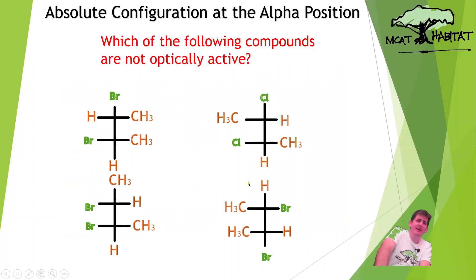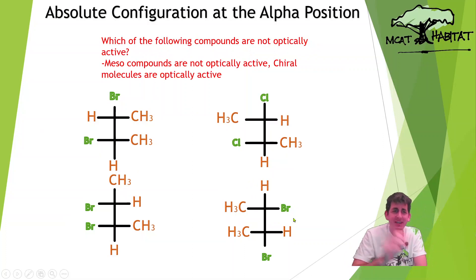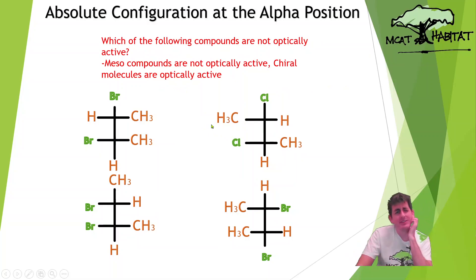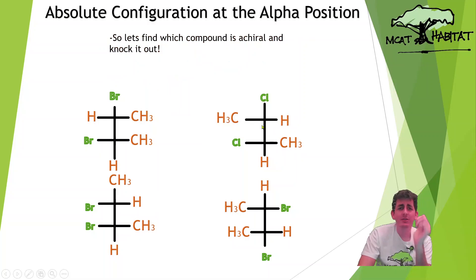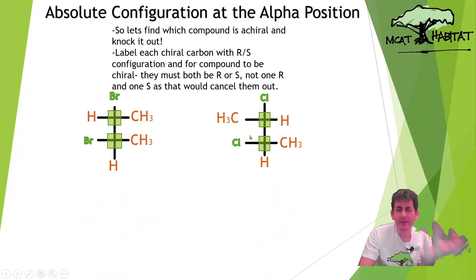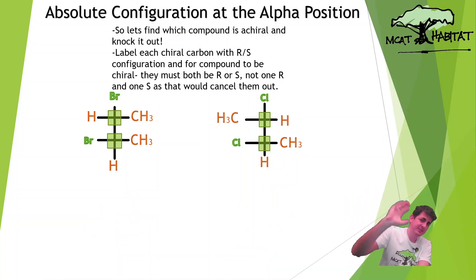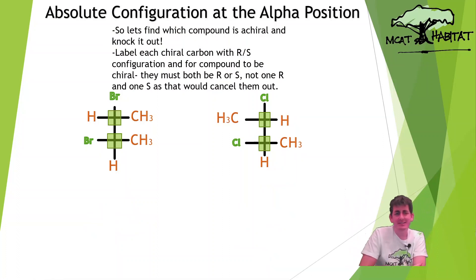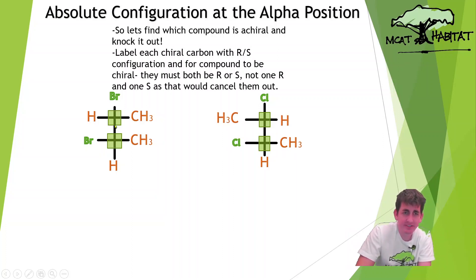Question: which of the following compounds is not optically active? Chiral compounds are optically active, so basically we're looking for the one that is not chiral. Meso compounds are not optically active — so which one is achiral? We'll look at the top two, because one of these is not chiral. To do this, we're going to use R and S as we started with. We have two chiral carbons here and two chiral carbons here, with four different groups attached to each.